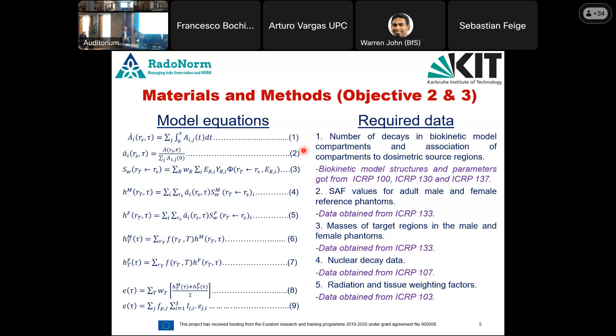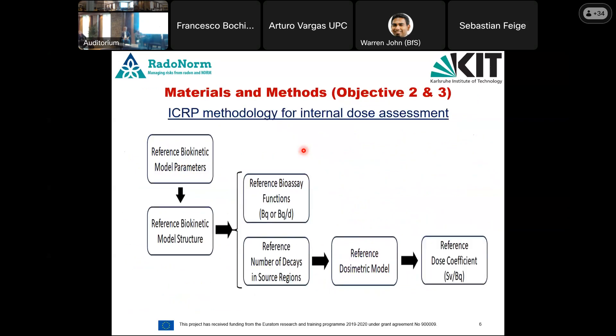The data required to implement these models was taken from several ICRP reference sources. The number of decays was obtained by implementing and solving a biokinetic model, with model structures from ICRP 100 for the HATM, ICRP 130 for the HRTM, and ICRP 137 for systemic models. Specific absorbed fraction values for adult male and female reference phantoms, and target region masses, are from ICRP 133. Nuclear decay data is from ICRP 137, and radiation and tissue weighting factors from ICRP 133.